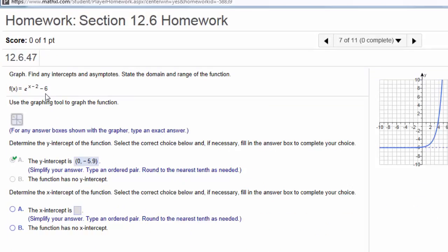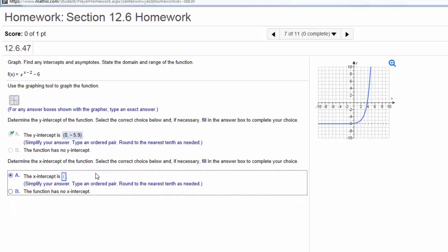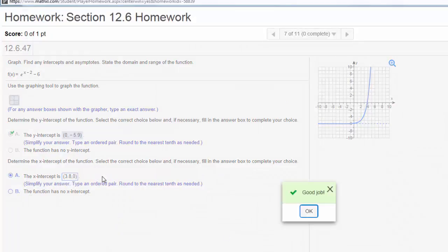On my calculator, the natural log of 6 is about 1.79. Adding 2 and rounding to the nearest tenth, that's 3.8. So for the x-intercept as an ordered pair, 3.8 comma 0. Check my answer. Good job.